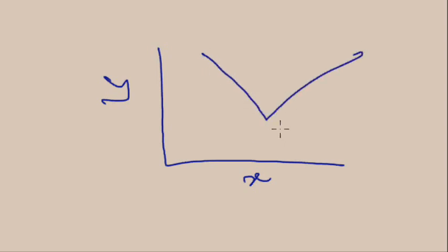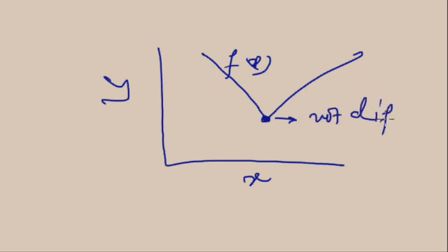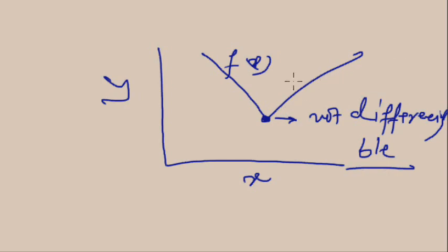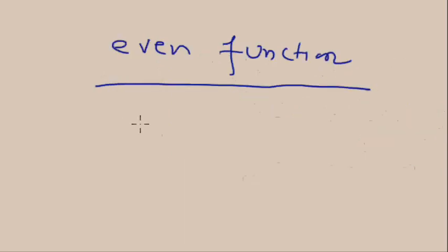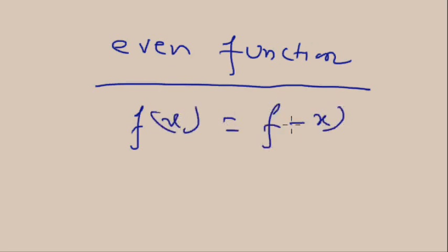Now, if at any point the graph of f(x) has a sharp turn, then the function is not differentiable at that point. You cannot find the tangent value at the sharp point of the function f(x).